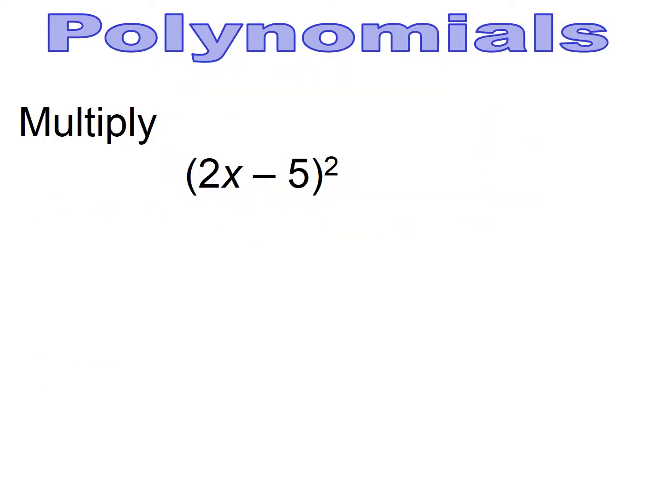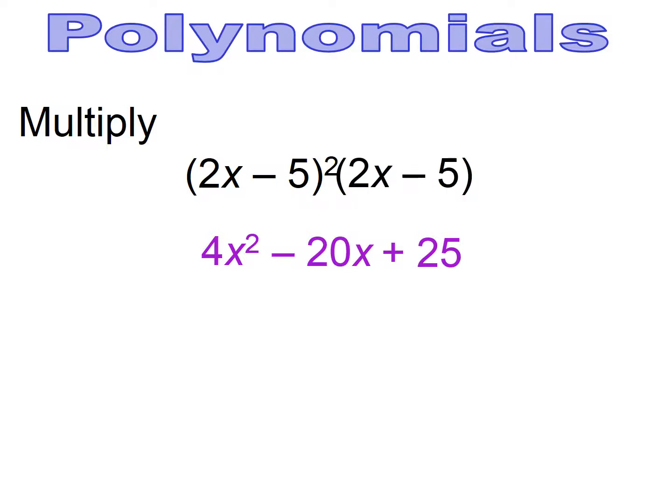Pause and try. Either you can use the shortcut: the first term squared is 4x squared, the two terms inside multiplied together — 2x times 5 — gives 10, doubled gives minus 20x. Then take the last term and square it to get plus 25. You could use the shortcut or write the binomial twice and multiply it out.